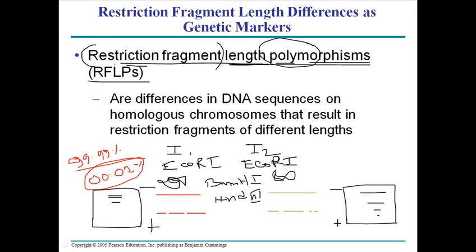We call these differences Restriction Fragment Length Polymorphisms, or RFLPs. No matter how closely related two people are, no two individuals are genetically identical — they will always have some differences in their genomic content. This type of experiment can reveal those differences, and RFLP technology allows us to distinguish between two different individuals by sampling and cutting their DNA with the same endonucleases and running electrophoresis.